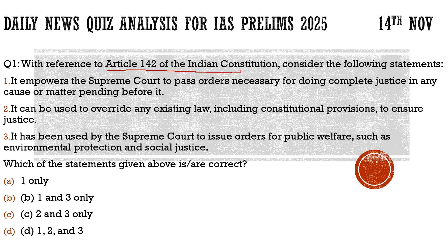The connection with Article 142 is that in this case, the Supreme Court invoked Article 142, which gives it extraordinary power to do complete justice. Now the question asks: with reference to Article 142, consider the following statements. Statement one: it empowers the Supreme Court to pass orders necessary for doing complete justice in any cause or matter pending before it — 100% correct. Statement two: it can be used to override any existing law, including constitutional provisions, to ensure justice — totally incorrect. It cannot go extra-constitutional or against constitutional provisions.